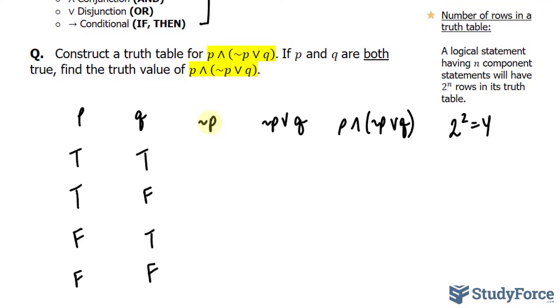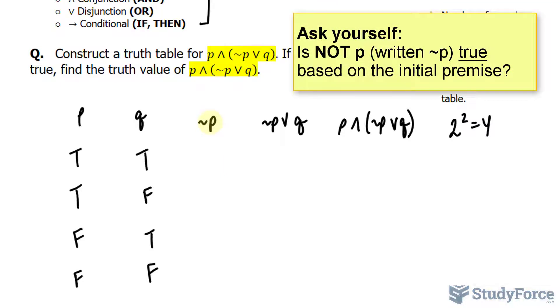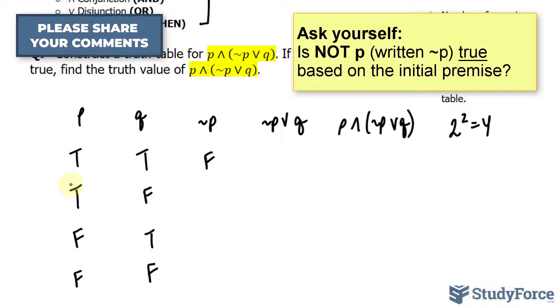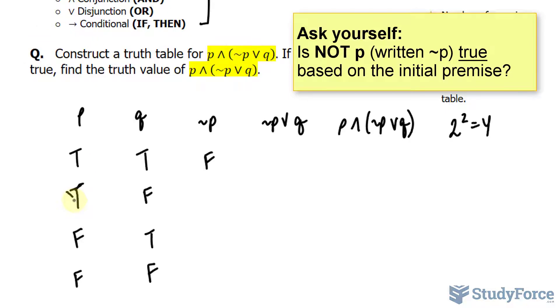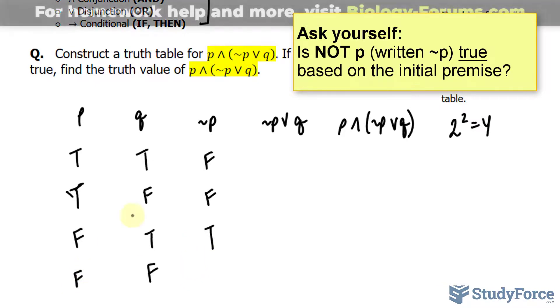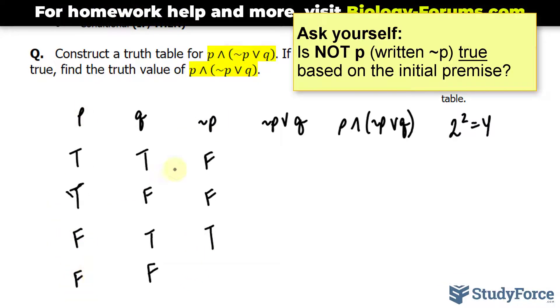We have ¬p. So you have to ask yourself: is this correct? We start with the premise that p is true, so obviously this is not correct. Similarly, if the premise here is p being true, then this has to be false. The premise here is that p is false, so this statement is true. And similarly, this statement is true, because we start with the premise that this p is false, and that means it's right.